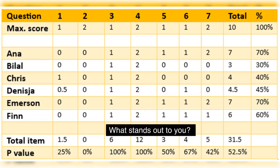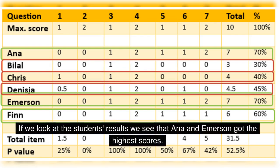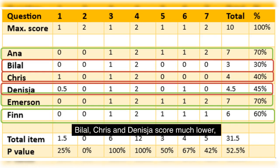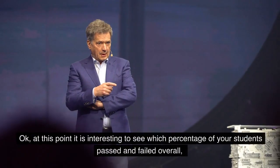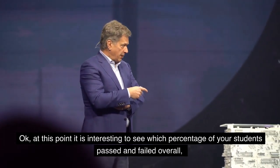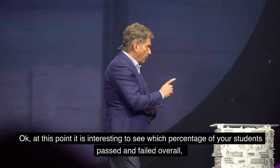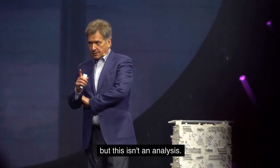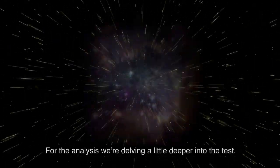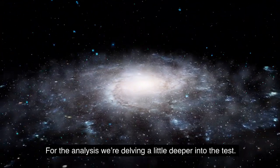What stands out to you? If we look at the students' results, we see that Anna and Emerson got the highest scores. Billal, Chris, and Danisha score much lower, and Finn scores 60%. At this point it's interesting to see which percentage of your students passed and failed overall, but this isn't an analysis. For the analysis we're delving a little deeper into the test.